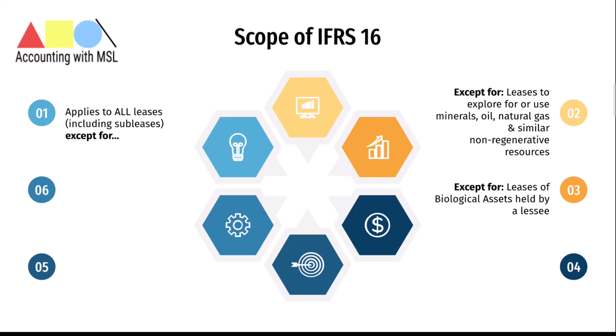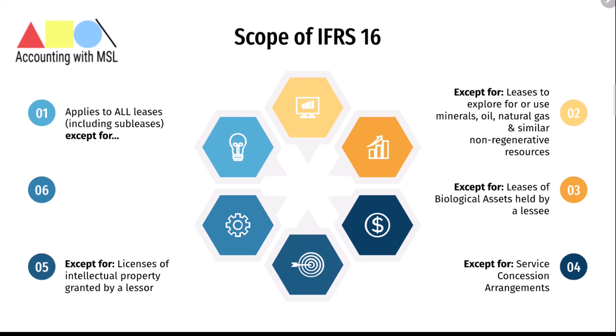The next exclusion from scope is leases of biological assets held by a lessee, which will typically be accounted for under IAS 41 Agriculture. Next are service concession arrangements, which fall under IFRIC 12. Also out of scope are any licenses of intellectual property granted by a lessor, which fall under IFRS 15 Revenue from Contracts with Customers.